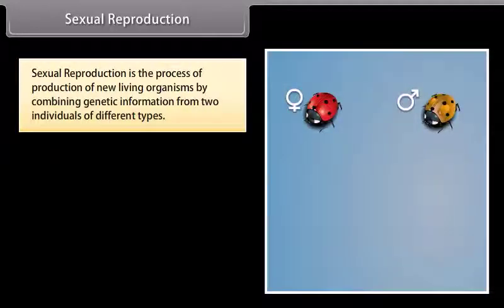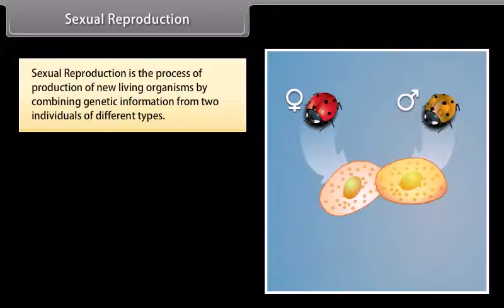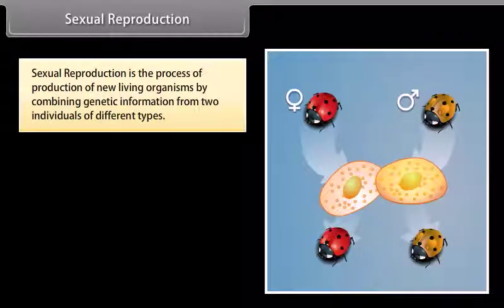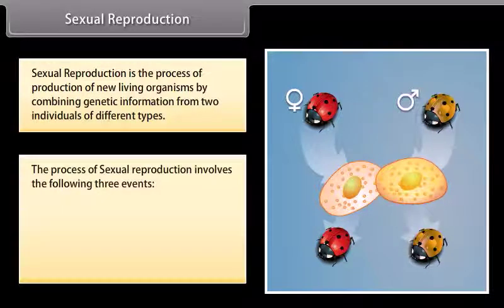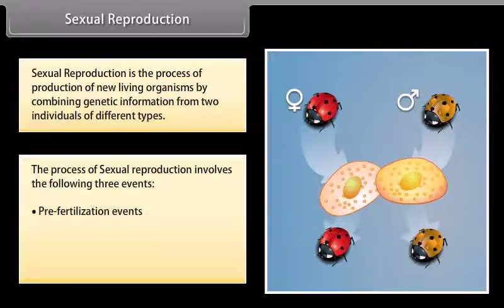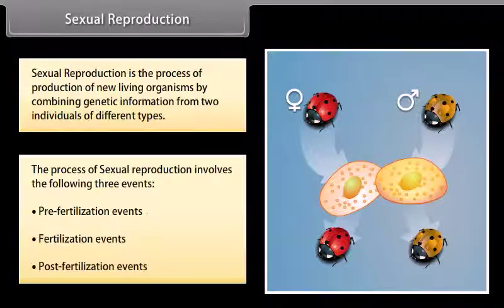Sexual reproduction is the process of production of new living organisms by combining genetic information from two individuals of different types. The process of sexual reproduction involves the following three events: pre-fertilization events, fertilization events, and post-fertilization events.